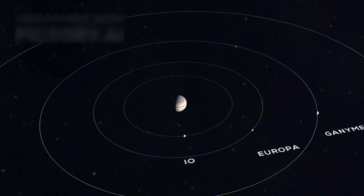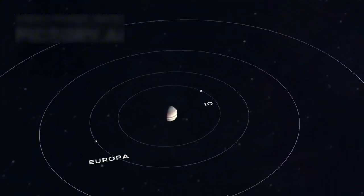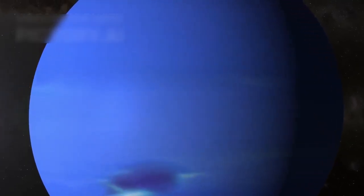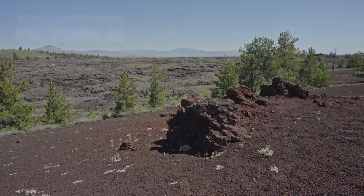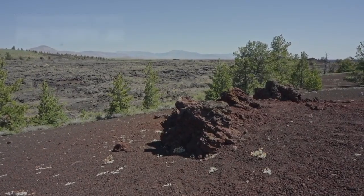Voyager 2 found 10 new Uranian moons, detailing their rocky makeup and dynamic orbits. On Neptune, it recorded 1,000 mph winds and giant storms. Triton, Neptune's largest moon, turned out to be among the coldest places in the solar system, with volcanoes that sprayed nitrogen gas instead of lava.